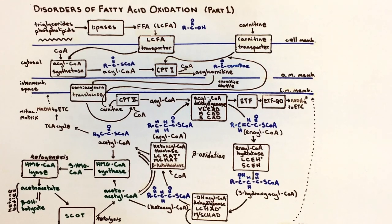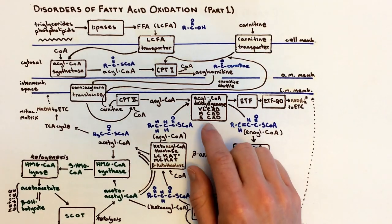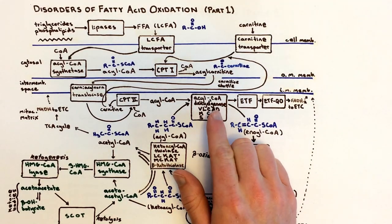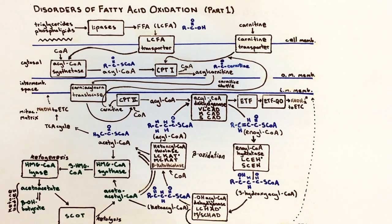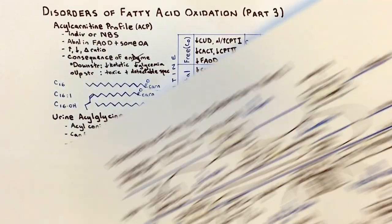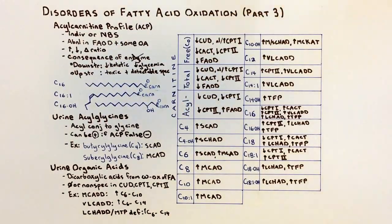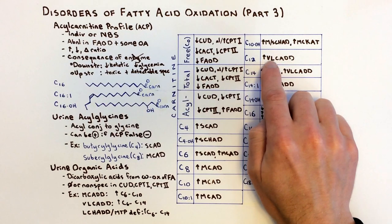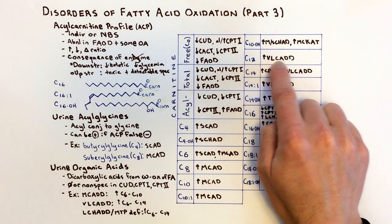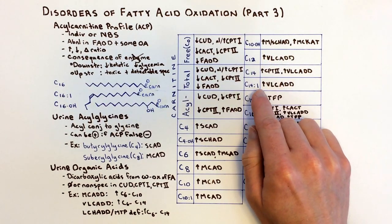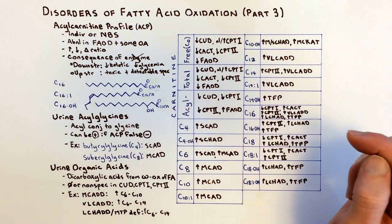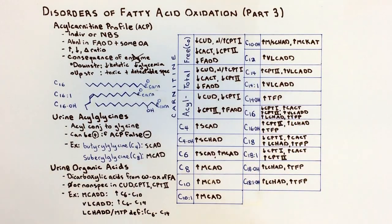Next is VLCAD deficiency. Here, acyl-CoAs toward the longer end build up. On the chart, we see increases starting at the C12 species, then C14, C14:1, and C16 acylcarnitines as well.